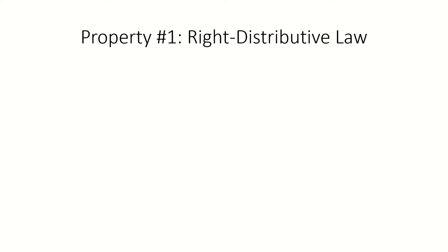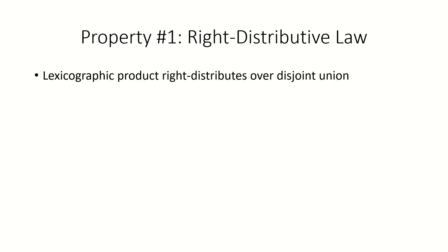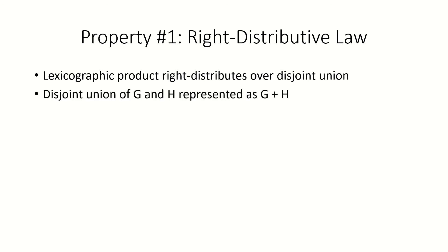The first property we're going to look at is the right distributive law of the lexicographic product. The lexicographic product right distributes over disjoint union, which is represented with a plus symbol in graph theory. Here are some examples of disjoint unions of graphs.